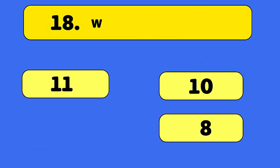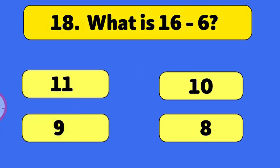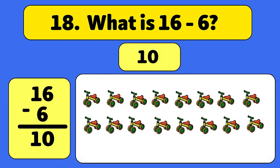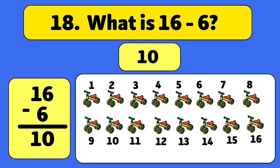What is 16 minus 6? The answer is 10. We start with 16 bicycles and take away 6. Let's count: 1, 2, 3, 4, 5, 6. We have 10 bicycles now.